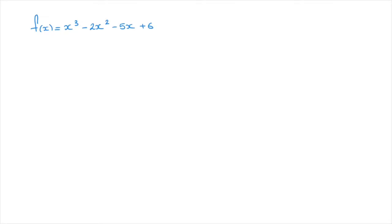The first example is the one we see here. We have a polynomial function, f of x, which is equal to x cubed minus 2x squared minus 5x plus 6. And say that we're interested in finding this polynomial's roots — in other words, this polynomial's zeros.